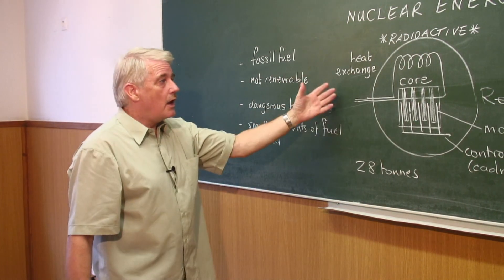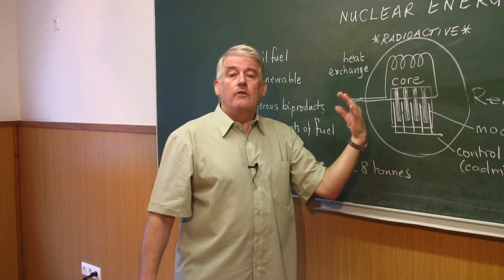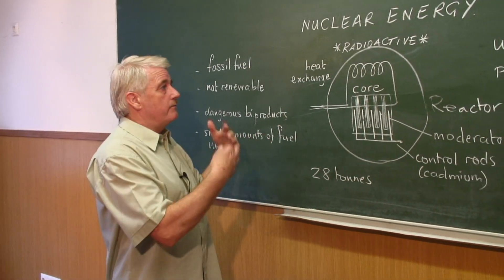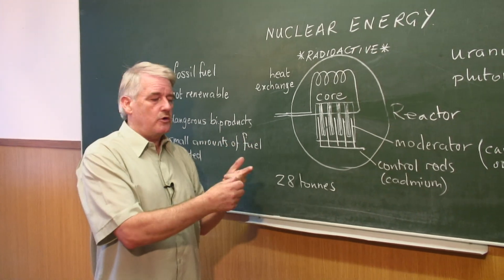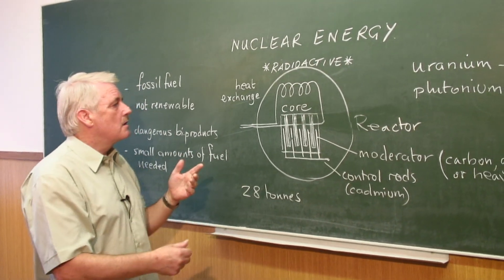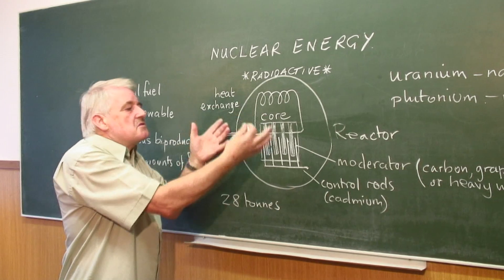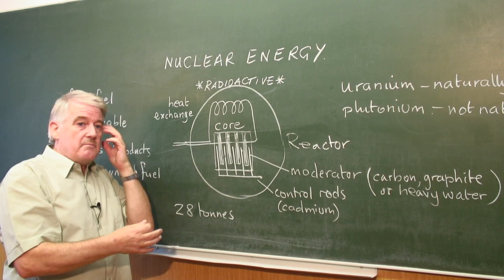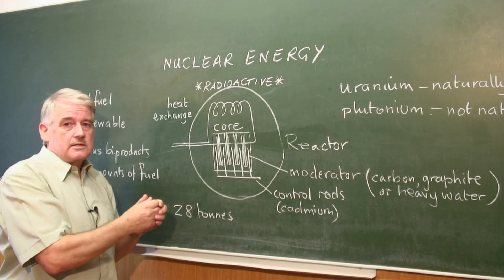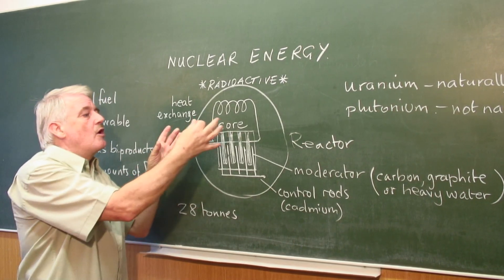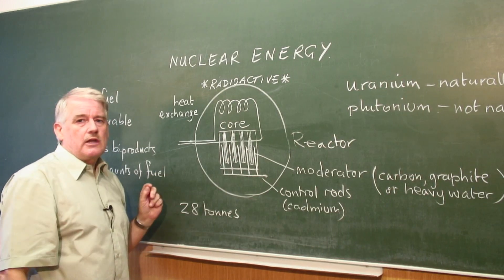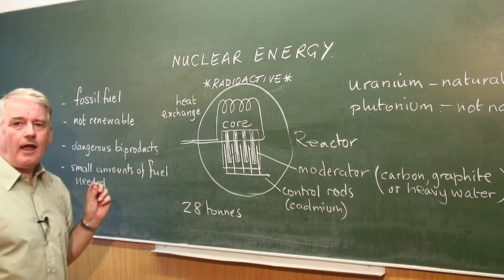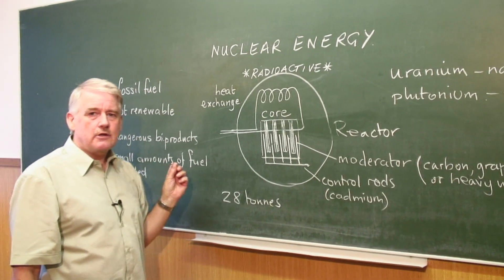So here we have basically the same device as in a conventional power station where you burn coal or gas. But the material is more dangerous. At the same time, it can be built well outside a town. It can be built where it isn't going to do any harm to the local population. So here we have how nuclear energy is generated. Thank you.